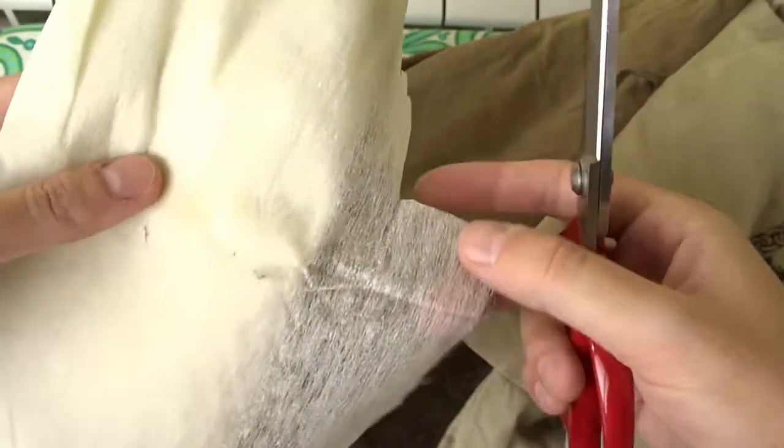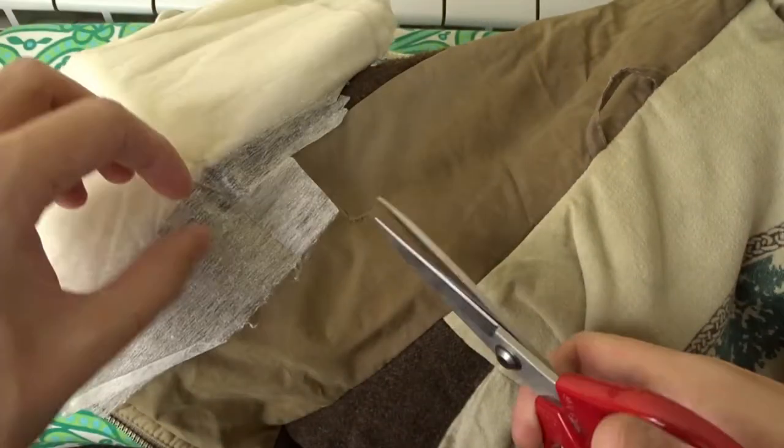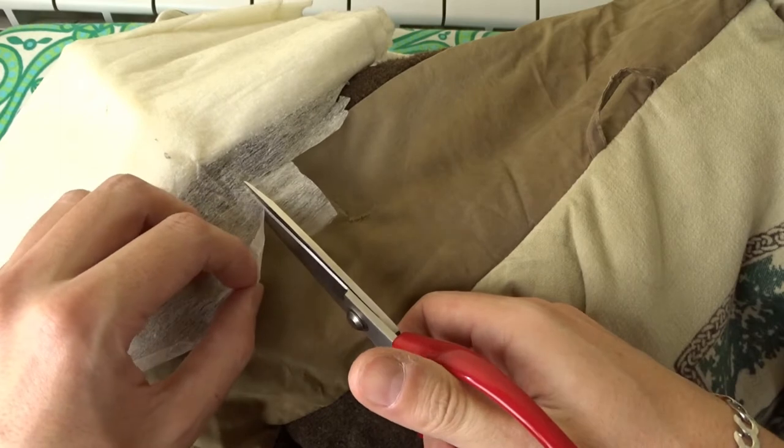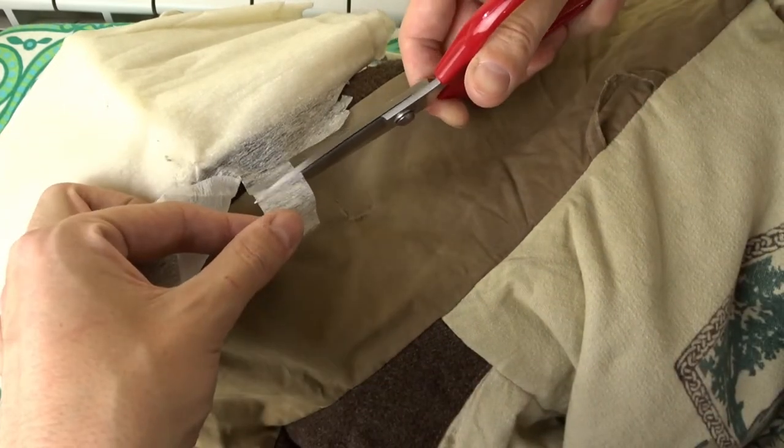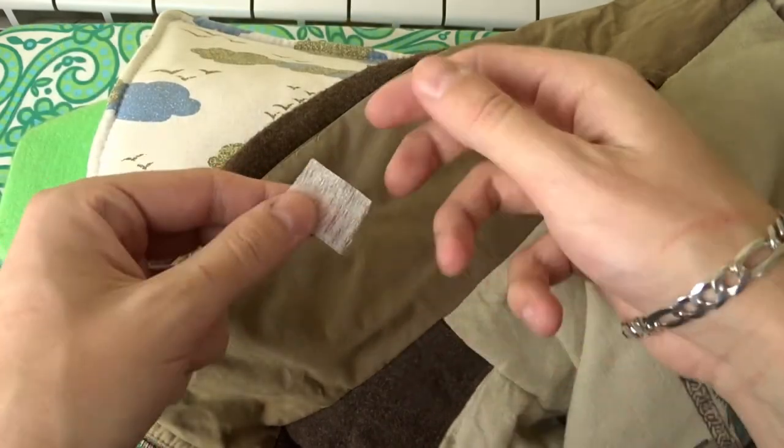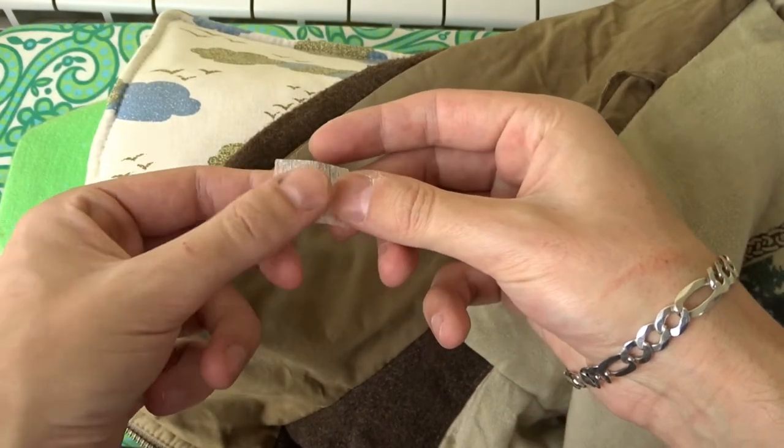I cut a piece of one-sided fusible interfacing slightly bigger than the hole. The rough side of the fusible interfacing should be facing up.